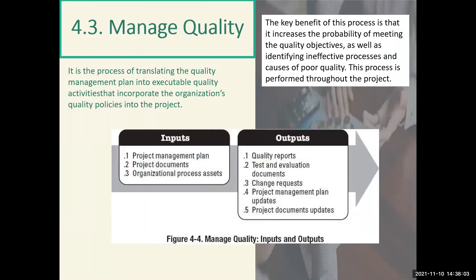The last topic for my report is Manage Quality. Manage Quality is the process of translating the quality management plan into executable quality activities that incorporate the organization's quality policy into the project. The key benefit of this process is that it increases the probability of meeting the quality objectives as well as identifying ineffective processes and causes of poor quality. This process is performed throughout the project. The inputs and outputs of this process are shown here in figure 4-4. For the inputs, we have: number one, project management plan; number two, project documents; and number three, organizational process assets.